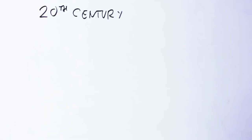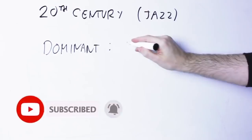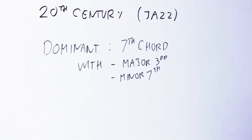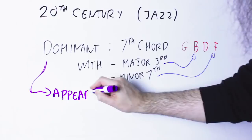But in the 20th century, with the arrival of jazz, the term dominant started shifting to a slightly different meaning. And indeed, jazz players called dominant seven all those seventh chords with a major third and a minor seventh, regardless of their position in the scale. Now, this does not seem to be a big problem at first.